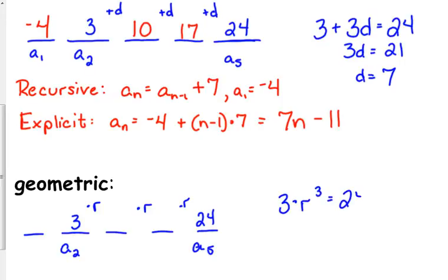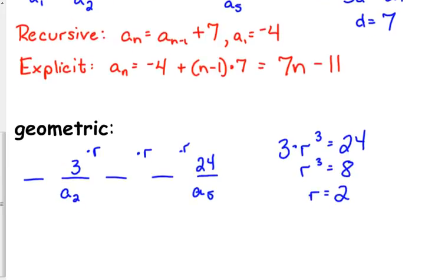We're multiplying by the common ratio 3 times, so 3 times r times r times r, r cubed, equals 24. So r cubed is equal to 8, so yes, the common ratio is 2. We can check that. If we multiply by 2 we get 6, multiply by 2 we get 12, and 12 times 2 is 24. So what does that make our first term? 1.5 or 3 halves.